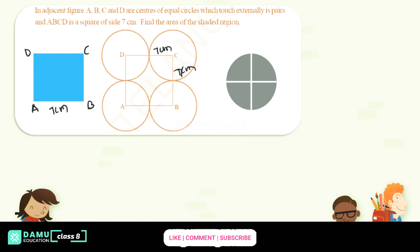We need to find the area of the shaded region. The shaded region is this area here. So for that, let's take this shape.